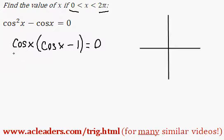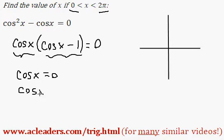Then we can split this up, of course. And from this cos x, either cos x is going to be 0 or cos x minus 1 is 0, which would give us cos x equals 1.